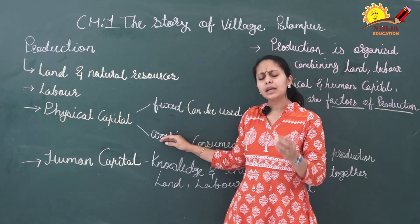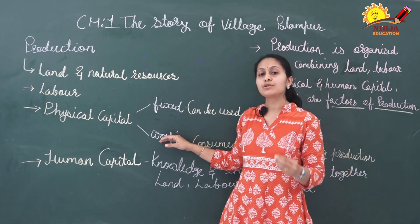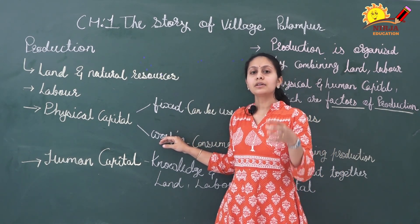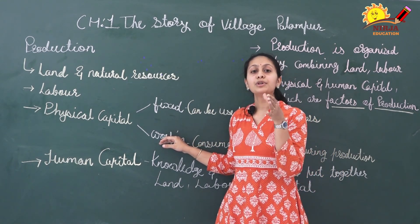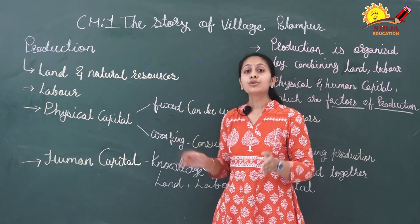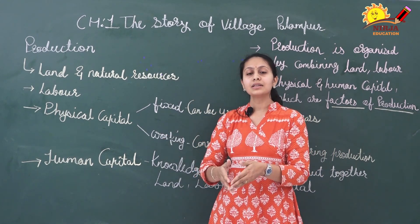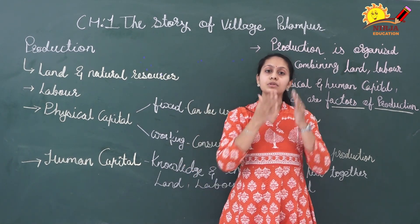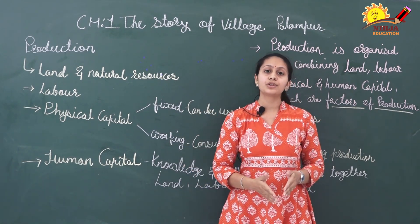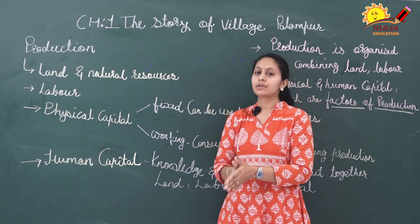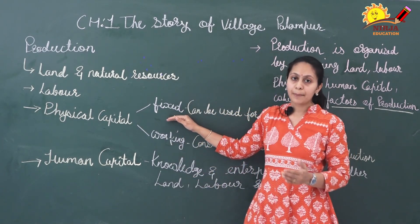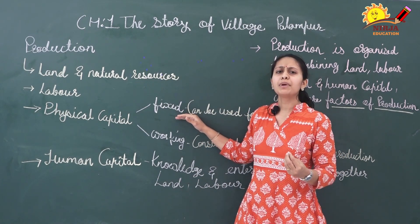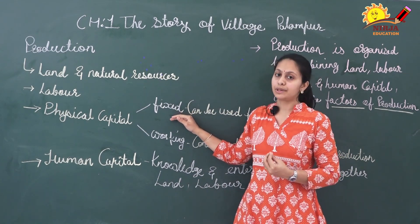More examples of fixed capital: if a farmer has purchased a tractor or thresher or other machinery, does he need to buy new machinery every cropping season? No — he can use the same tractor and same thresher for several years. So that becomes fixed capital. Buildings, tools, and machinery are all examples of fixed capital.